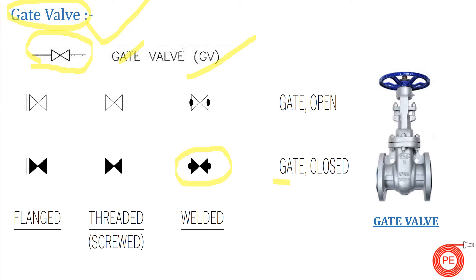There are two more symbol variations for the gate valve. If the valve symbol is dark or blackish in color inside, it means the valve is closed. If it is not black from inside, the valve is in the open position. This dark/blackish fill for closed and hollow for open is common for every valve.